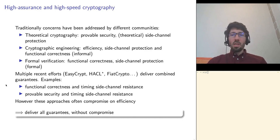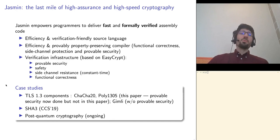In this work, we would like to deliver all the guarantees without any compromise. To do so, we rely on two things: methodology and tooling. At the heart of this work is Jasmin, a programming language in which the programmer can write very efficient code, and this code can still be formally verified.